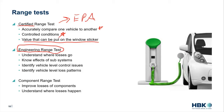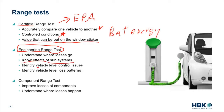The engineering tests are a little more complicated. In the EPA or certified test, all we care about is battery energy. But in the engineering test, we want to know how each component uses energy. We want to understand the effects of each subsystem, look at vehicle level control issues, and understand vehicle level loss patterns.